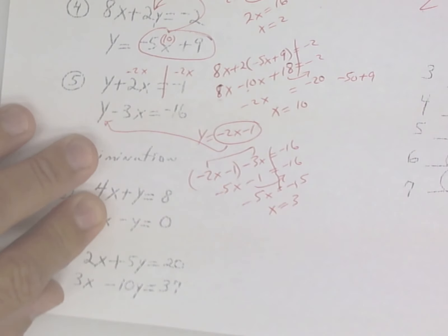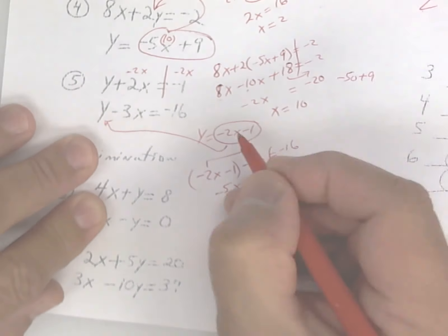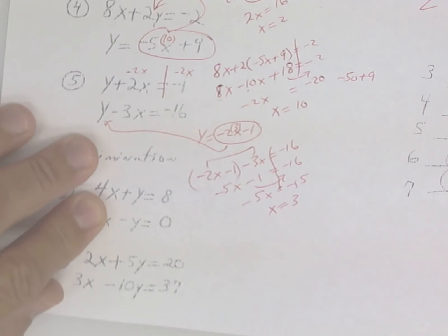I take 3 and plug it right here. That gives me a negative 6, minus 1 is a negative 7.